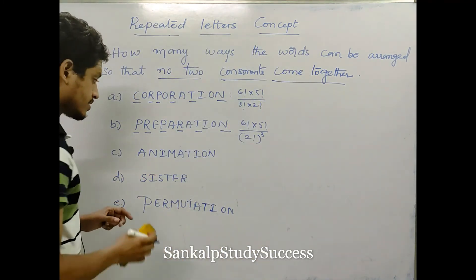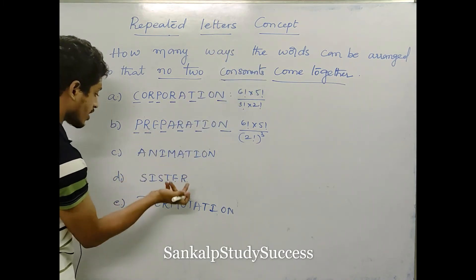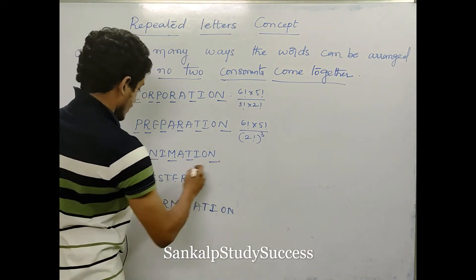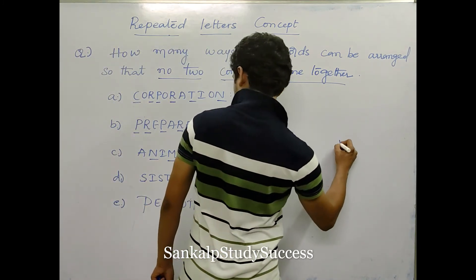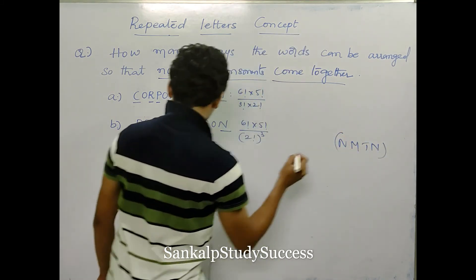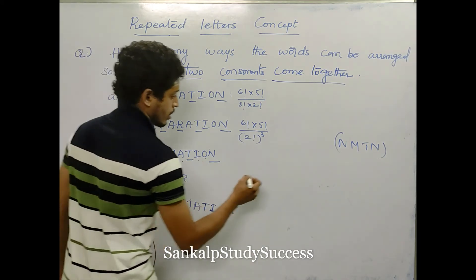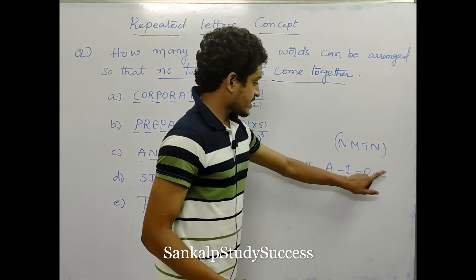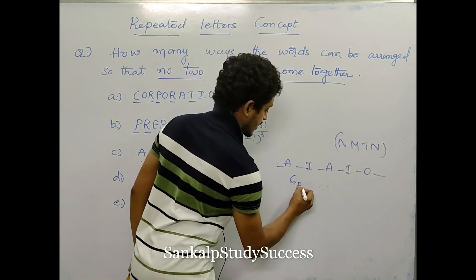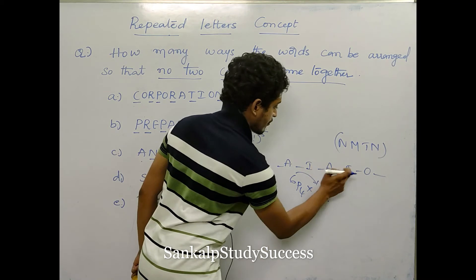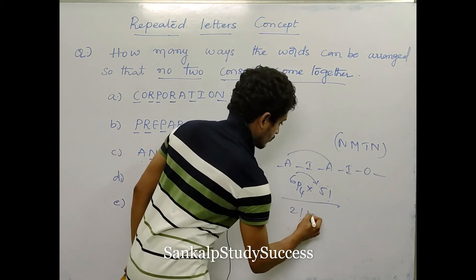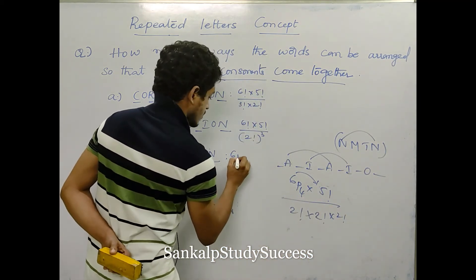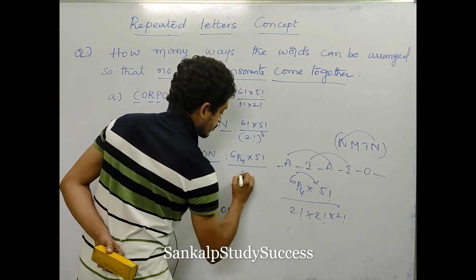For ANIMATION — no two consonants come together. The consonants are N, M, T, N — four consonants. The vowels are A, I, A, I, O — five vowels giving six places. Arrange 4 consonants in 6 places: 6P4, into 5 factorial for vowels, divided by A repeated 2 times (2 factorial), I repeated 2 times (2 factorial), and N repeated 2 times (2 factorial). Answer: 6P4 into 5 factorial divided by 2 factorial whole cube.